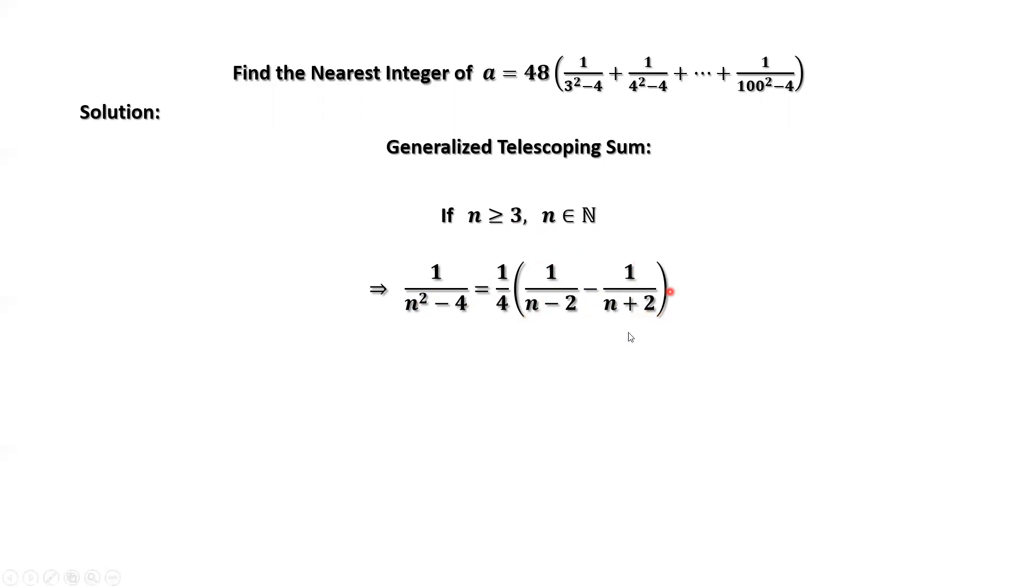We can look at it this way. From the right-hand side, the inside part of this parenthesis, we can consider the common denominator, which is n minus 2 times n plus 2. n minus 2 times n plus 2 is n squared minus 2 squared, which is n squared minus 4. The numerator is n plus 2 minus n minus 2. Minus minus 2 is plus 2. Therefore, the numerator of the inside part is 4. 4 divided by 4 equals 1. That means the left-hand side equals the right-hand side.